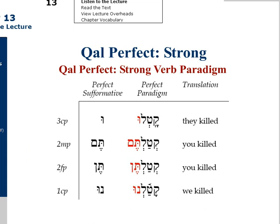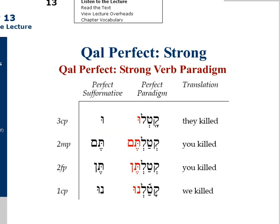Observation number six: note the vocal shewa under the first consonant of the verbal root in the second masculine plural and second feminine plural forms — kataltem, katalten. Note the shewa beneath the kof in both of these forms. Observation number seven: be careful to note the placement of accent in each form and be careful to preserve the placement of accent in pronunciation. Observation number eight: be certain that you master the spelling of each formative or inflectional ending.